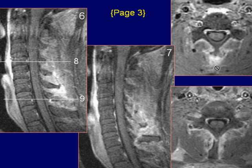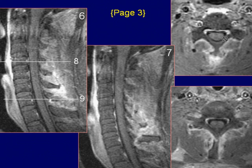Axial post-contrast fat saturation T1-weighted images again show enhancement in the region of the pre-vertebral space and interspinous ligament, with a fracture of the C7 spinous process. There is no significant contrast enhancement seen within the spinal cord.